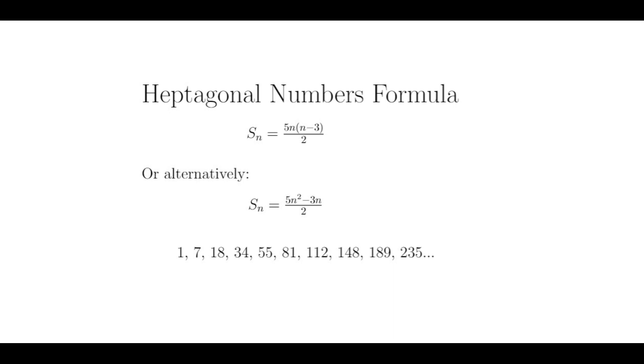Notice that this will always be a whole number for any natural number n. This is because either n is even and hence divisible by 2, or n is odd, which makes 5n also odd, which makes 5n minus 3 even, because an odd number minus an odd number is even, which of course is divisible by 2.